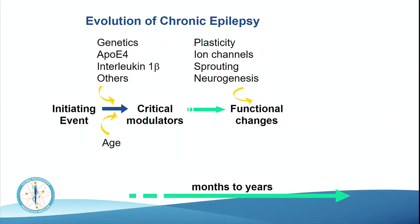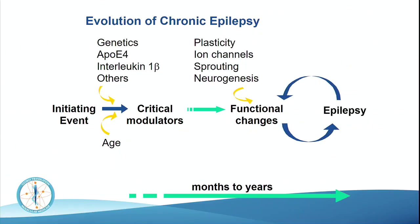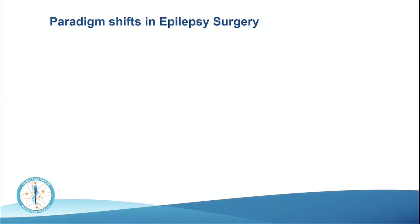With chronic epilepsy, there is often an initiating event with modulators. Epilepsy doesn't start immediately — after a head injury or stroke, chronic epilepsy typically begins after months or years. It is a dynamic process, and the epilepsy itself begets functional changes which lead to chronicity. We are desperately looking for drugs and other procedures to stop this vicious cycle and interrupt epileptogenesis, but although this can be shown in experimental animals, we still don't have that in man.